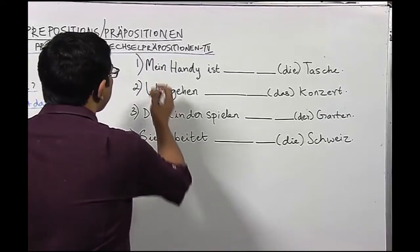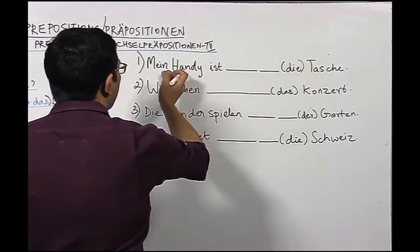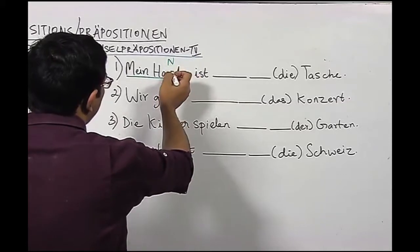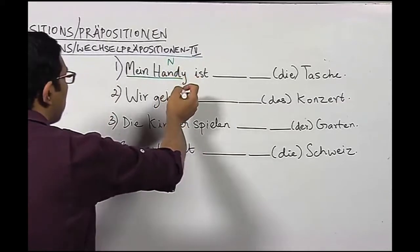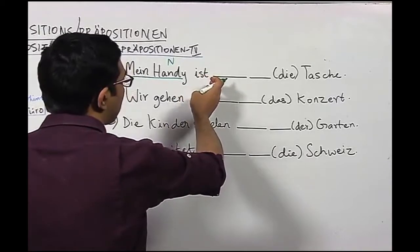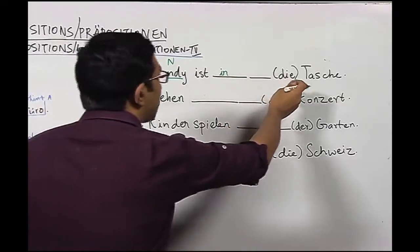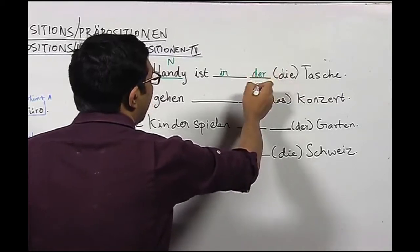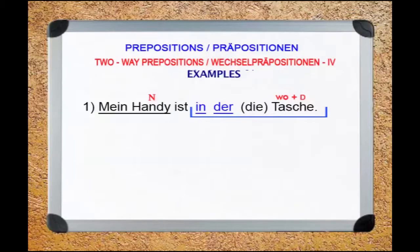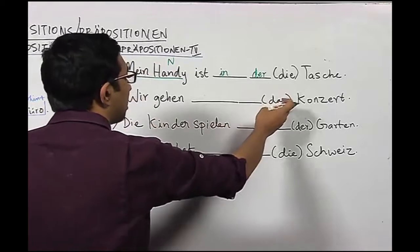Sentence number one: Mein Handy ist in der Tasche. The nominative is 'mein Handy' — 'Handy' carries the article 'das' and means mobile phone. The verb 'ist' is from 'sein', which is a dative verb, so we use 'in' in the dative form. The article 'die' for Tasche becomes 'der' in dative, giving us 'in der Tasche' — my mobile phone is in the bag.